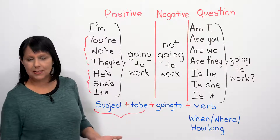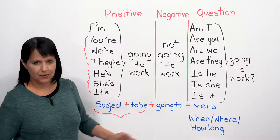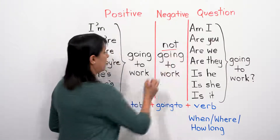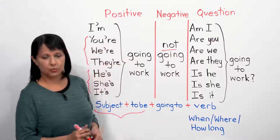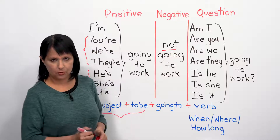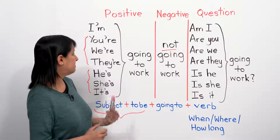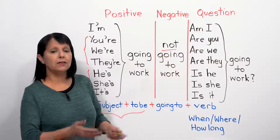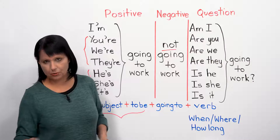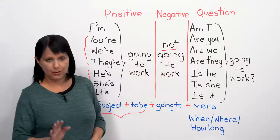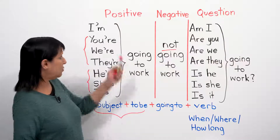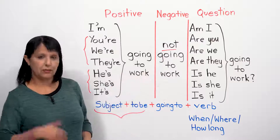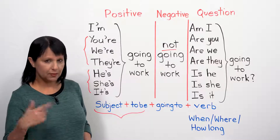To make it negative, we simply add the word 'not': 'I'm not going to work tomorrow,' 'he's not going to work,' 'they're not going to work.' You keep the contracted version and just add 'not.'